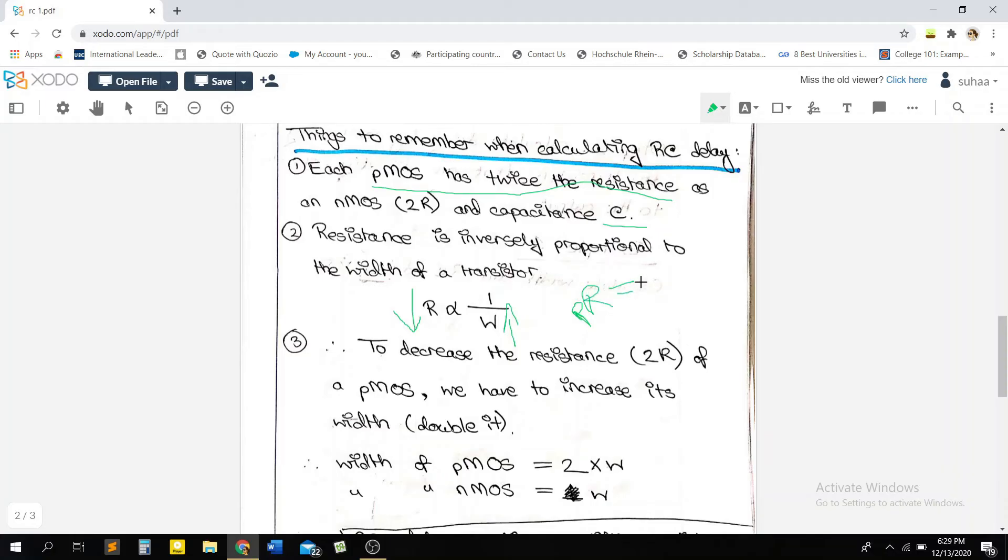Excuse my writing, I'm very bad at writing here like this on a laptop. So in order to make the PMOS resistance equal to the NMOS resistance, we need to increase the width of the PMOS. Because we want to decrease the resistance of the PMOS, which is why we're going to increase the width.